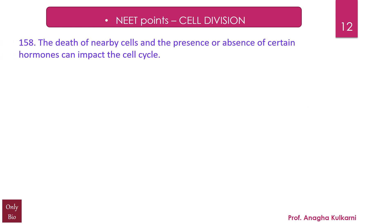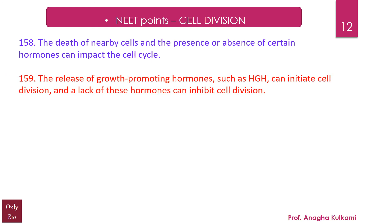Point number 158: The density of nearby cells and the presence or absence of certain hormones can impact the cell cycle. The release of growth-promoting hormones such as human growth hormone can initiate cell division, while the lack of these hormones can inhibit cell division.